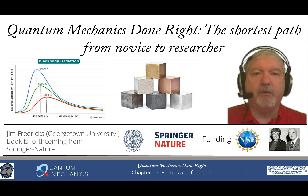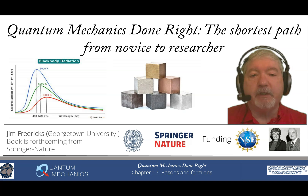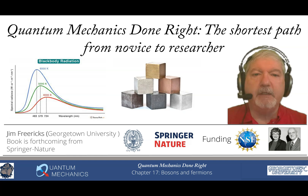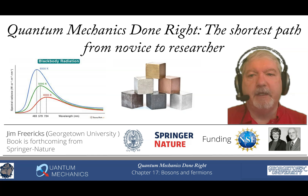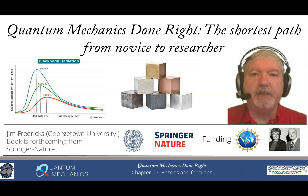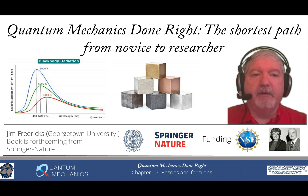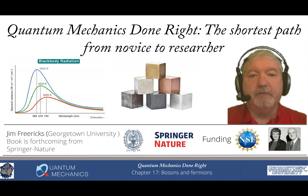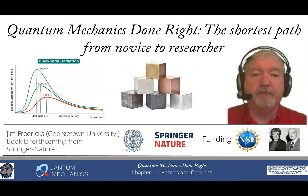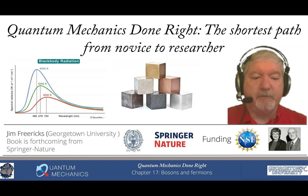Welcome to the 23rd video of Quantum Mechanics Done Right, the shortest path from novice to researcher. In this chapter we're going to be discussing the quantum mechanics of bosons and of fermions. On the left I have an image of black body radiation, which is the characteristic image of bosons — in this case the boson being a photon — and in the center I have a stack of different metals. Fermions are most commonly described in terms of electrons and solids, and so all metals are behaving in many respects like fermionic gases.